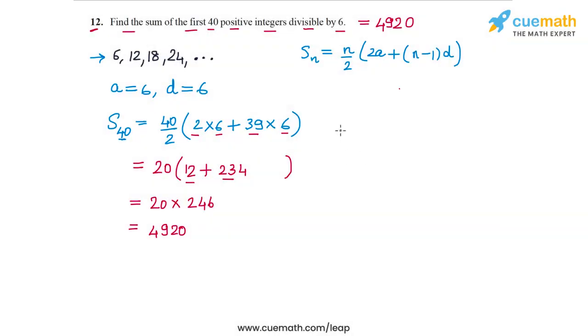By the way, another way to calculate this same sum is as follows. We have this sum 6 + 12 + 18 up to 40 terms. This is what we had to calculate.